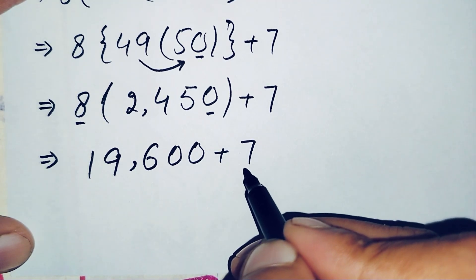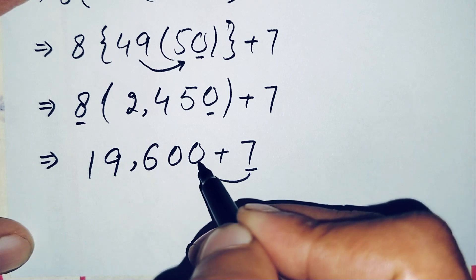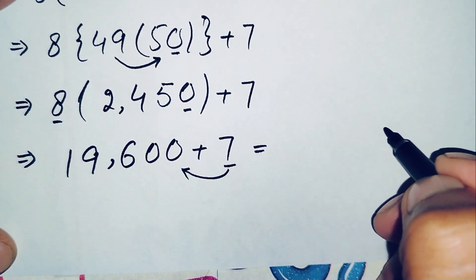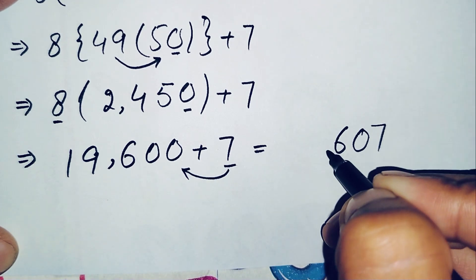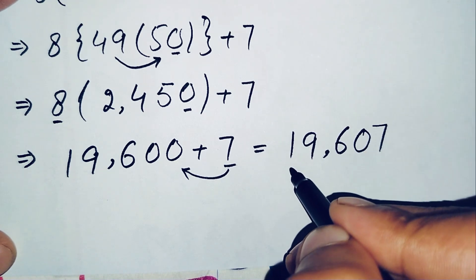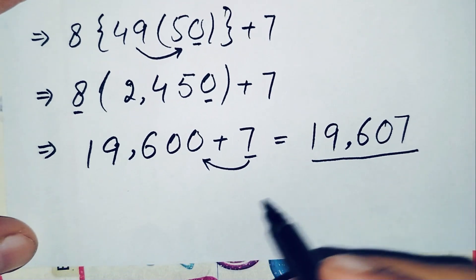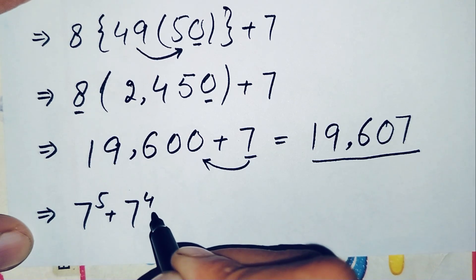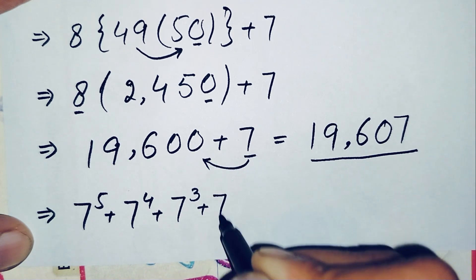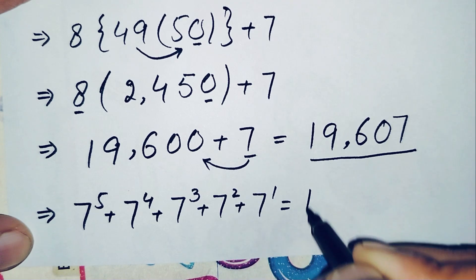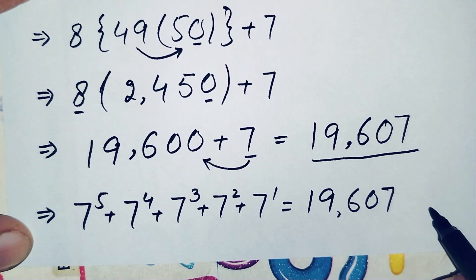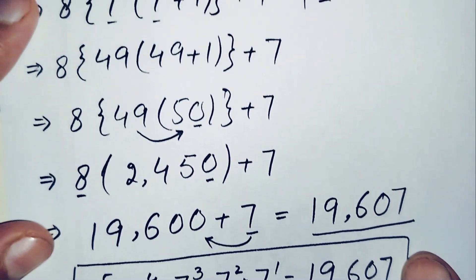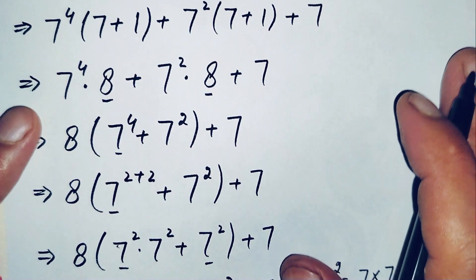Finally, we add seven to nineteen thousand six hundred. The ones digit of nineteen thousand six hundred is zero, so zero plus seven is seven, and the remaining digits stay the same. Therefore, the final answer is nineteen thousand six hundred and seven. The value of seven raised to power five, plus seven raised to power four, plus seven raised to power three, plus seven raised to power two, plus seven raised to power one, equals 19,607. Thanks for watching, and don't forget to subscribe to the YouTube channel!